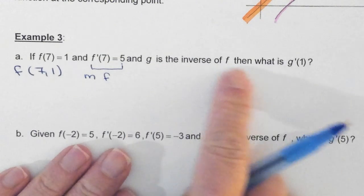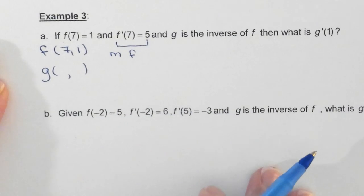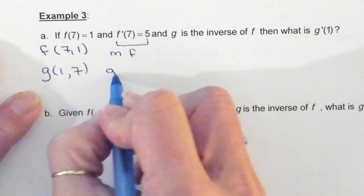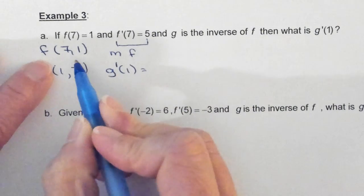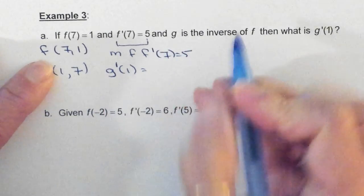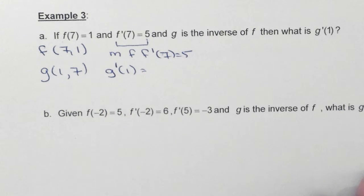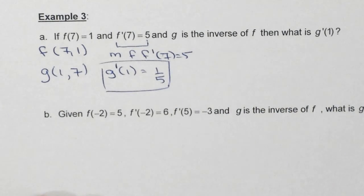Then it says that g is the inverse of f, what is g prime of 1? So first of all, if f and g are inverses, what is the ordered pair of g? It is (1, 7). So now does it make sense that they can ask us for g prime of 1? If we know that the slope of f, f prime of 7 is equal to 5, because these two are inverses of each other, based on the rule, it is the reciprocal that will give us g's slope, which is 1/5.